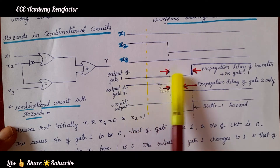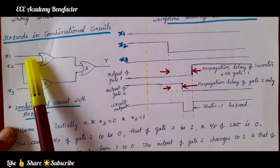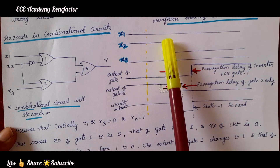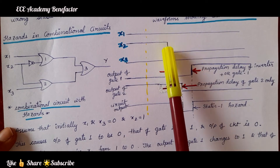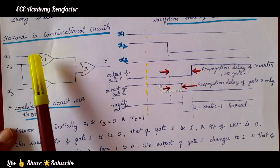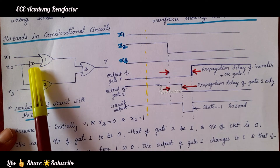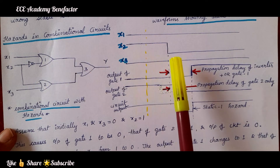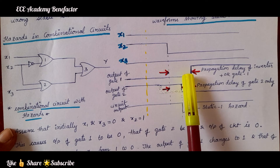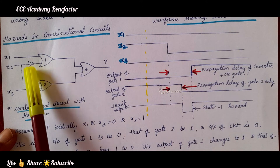When input x2 changes from 1 to 0, x2 becoming 0 means after the inverter (NOT gate) the output becomes 1 — so gate 1 gets 0 and 1, meaning its output should go to 1. However, due to the propagation delay of the inverter and gate 1, the output of gate 1 does not change immediately but after a certain time.